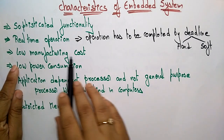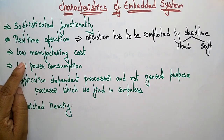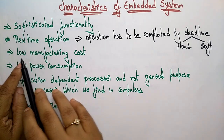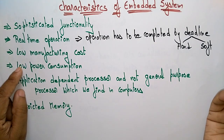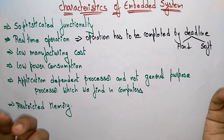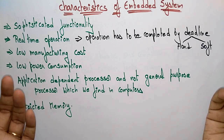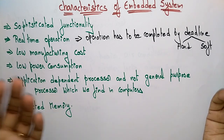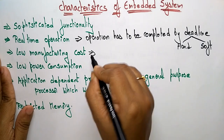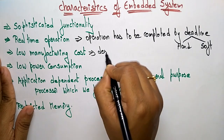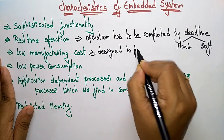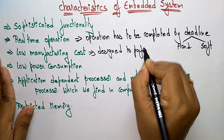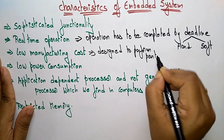Next is low manufacturing cost. When compared to general purpose systems, embedded systems have a low manufacturing cost. The cost of manufacturing is less because the embedded system is designed to perform only a particular task.